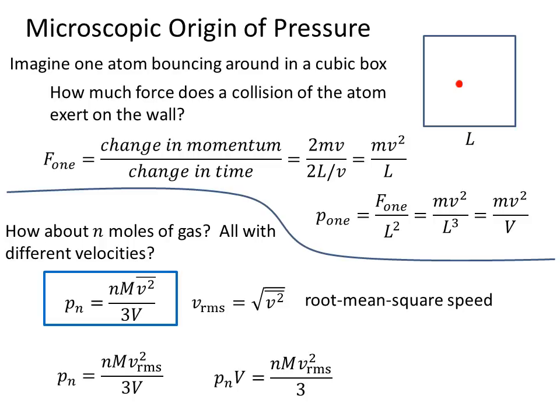We can also rearrange this a little bit. As P times N times V is equal to N times the molar mass times the RMS velocity squared divided by 3.